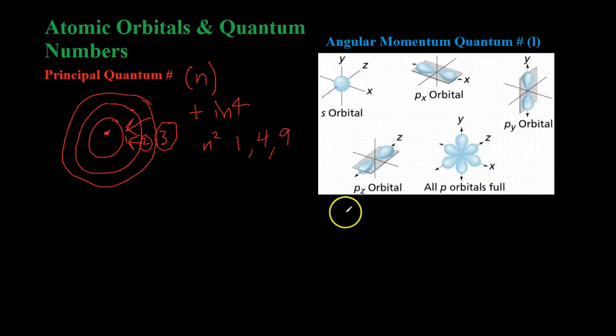Alright, the next quantum number is something called the angular momentum quantum number, which is represented by the lowercase letter l. And basically what it describes is the shape of an orbital within an energy level. So, for example, l equals zero corresponds to something called an S orbital, which is a sphere of probability of finding an electron. And then a P orbital corresponds to l equals one. And a P is a sort of dumbbell shape. And as you can see, it can be oriented various different ways, which we'll get to later.